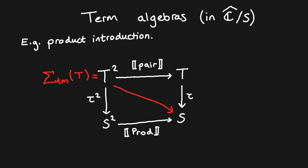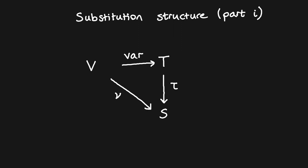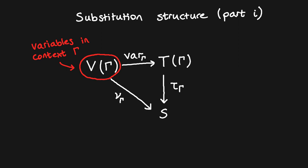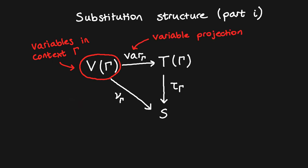We'll see a more sophisticated example of algebraic term structure shortly, but first we must discuss the substitution structure on terms. There are two aspects to substitution structure we need to consider. First, we should be able to project variables from contexts into terms — a typed term structure has variables if we have a map from V into T. For each context Gamma, V of Gamma is a set of variables in that context. Concretely, V is given by the Yoneda embedding of each type, viewed as a one-variable context. The natural transformation nu is given by projecting out the type of each variable. T being an algebra of V amounts to T being closed under variable projections, meaning variables in a context may be treated as terms in that same context.